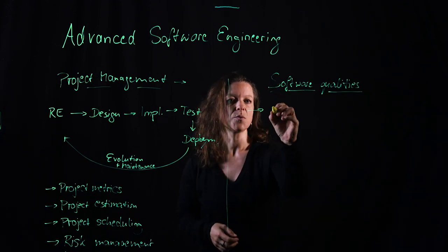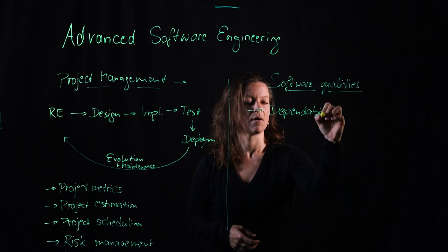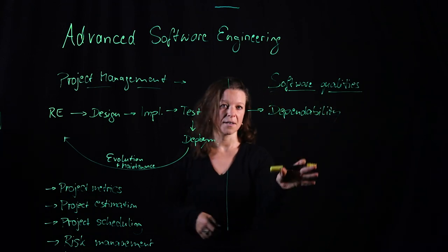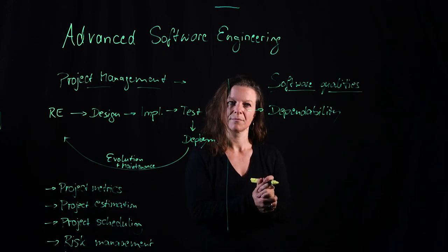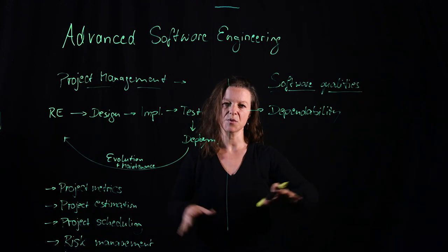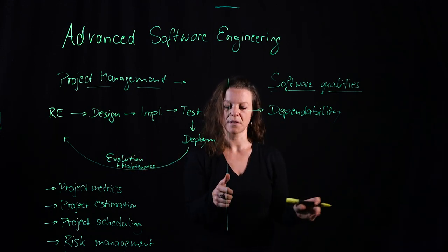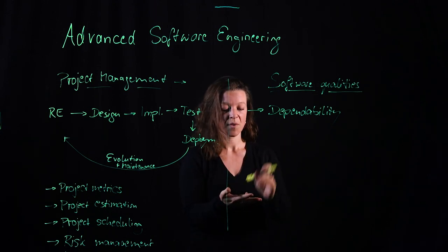So the one that we're going to start with is dependability. Dependability means I can trust the software system. It's almost like in a relationship. Dependability is composed by a number of things. It has to do with reliability, safety, security, availability.